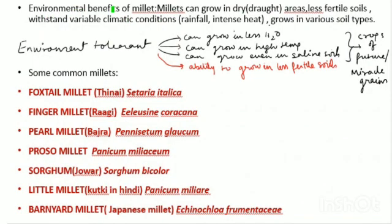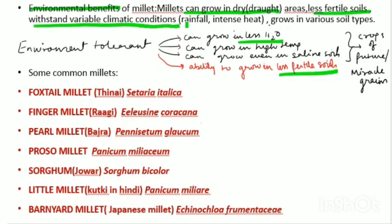Apart from nutritional benefits, millets also have many environmental benefits. Researchers have found that millets can grow in drought areas, in less fertile soils, and can withstand variable climatic conditions - for example heavy rainfall, intense heat, and various soil types including saline soils.